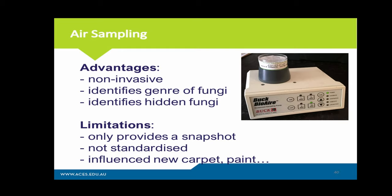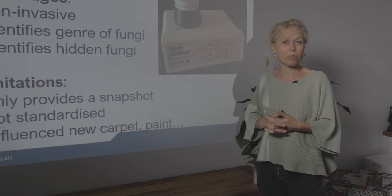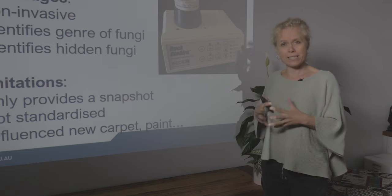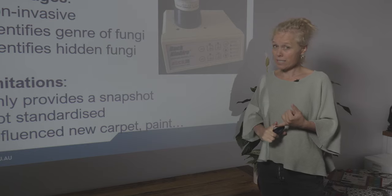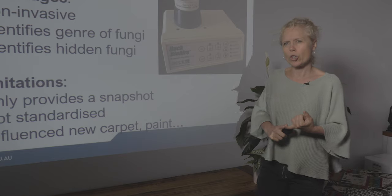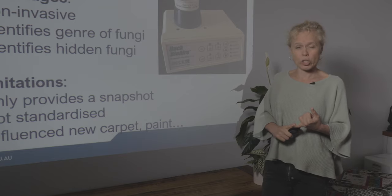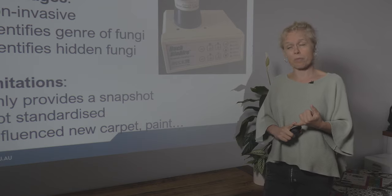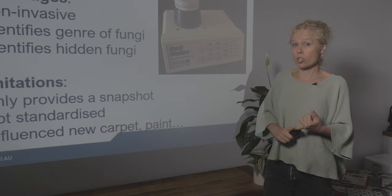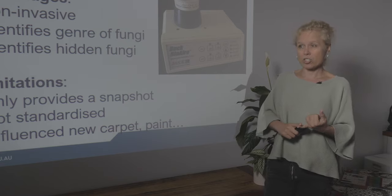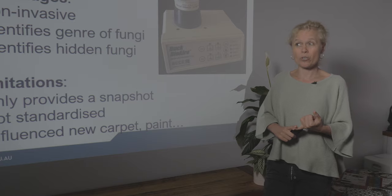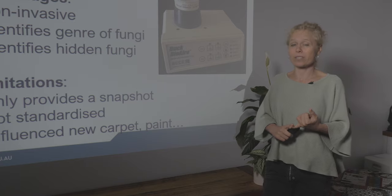Air sampling and surface sampling is critical because without doing that, you don't know if there's a problem in the house. By the time you get to this stage, you have conducted an exposure history with the client. That can help you know where to look — where there are issues with moisture, condensation, drainage problems, or plumbing issues. Clients will also tell you health problems; if there's asthma, allergies, or fatigue syndrome, that's often associated with mould.